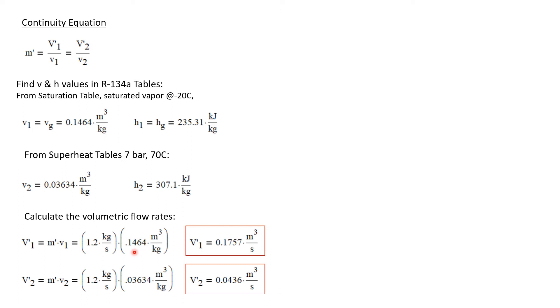We pulled this value for V1 from the table. And we pulled this value as V2 from the table. And we see that the volumetric flow rate at state one is 0.1757 cubic meters per second. And the volumetric flow rate at state two is about a quarter of that. And that's because the gas has been compressed.